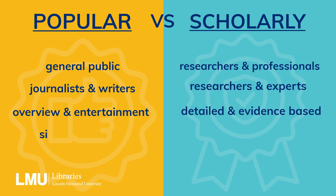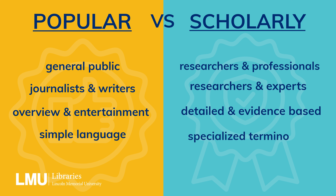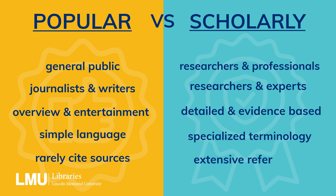Popular articles use simple language, while scholarly articles use technical and specialized terminology. Popular articles rarely cite sources, whereas scholarly articles include extensive references.